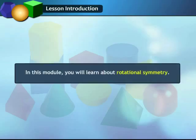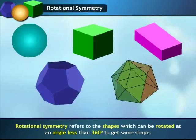In this module, you will learn about Rotational Symmetry. Rotational Symmetry refers to the shapes which can be rotated at an angle less than 360 degrees to get the same shape.